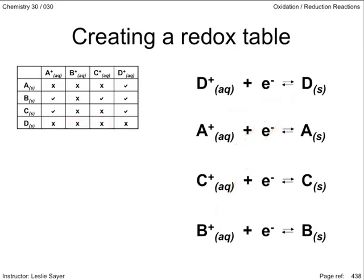From this table of reduction half-reactions, we can easily see that the D ion is the strongest oxidizing agent, and that the B metal is the strongest reducing agent.